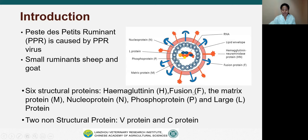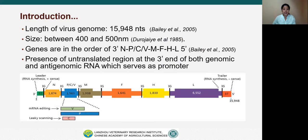Hemagglutinin and fusion proteins are the surface proteins embedded in the envelope. Matrix protein is found below the envelope, which serves as a link between the outer envelope and ribonucleoprotein complex. Nucleoprotein, phosphoprotein and large protein constitute the nucleocapsid which encloses the viral RNA. P and C proteins are the two non-structural proteins. The genome is 15,948 nucleotides long, ranging between 400 and 500 nanometers, with genes ordered 3'-NP-M-F-H-L-5'.